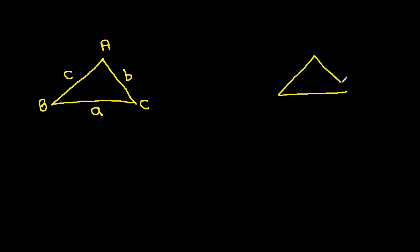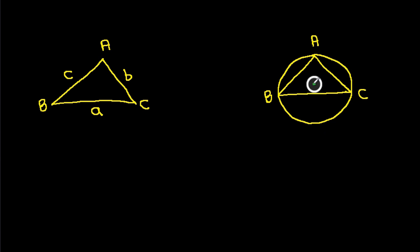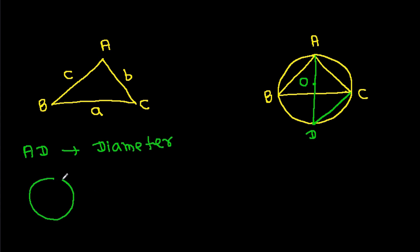In triangle ABC, we can make a circle around ABC, and suppose the center of the circle is O. If we join AO and extend it to point D on the circle, and join CD, then AD will be the diameter. In any circle, a diameter makes an angle of 90 degrees on the circle.